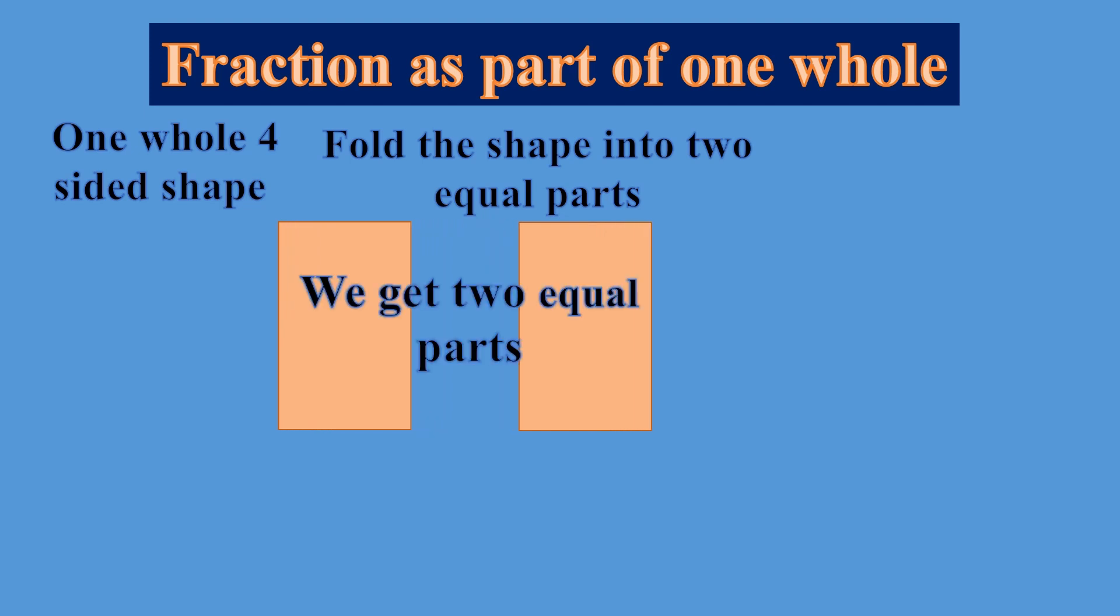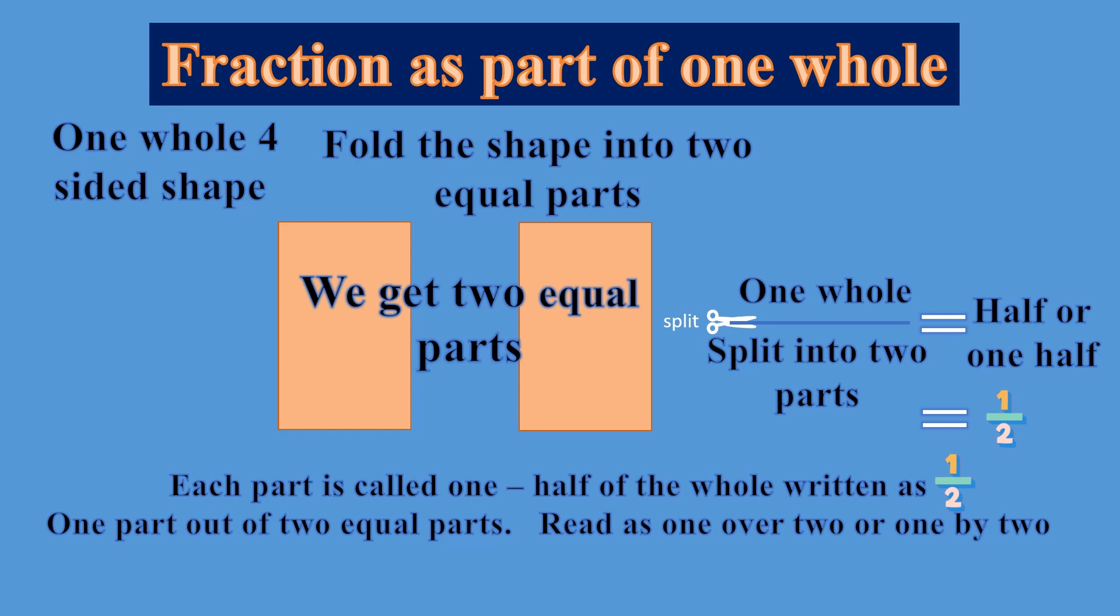Now when you do like this, you will get two equal parts. This we can write mathematically as one whole split into two parts gives half or one half, written as 1/2. Each part is called one half of the whole, written as 1/2. One part out of two equal parts is 1/2. It is read as one over two or one by two.